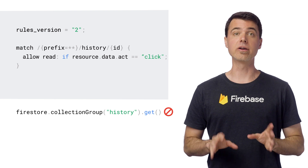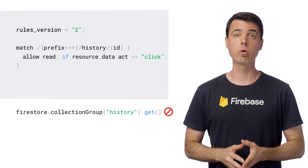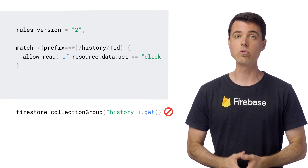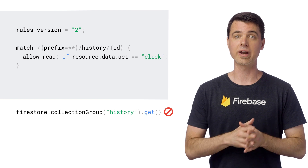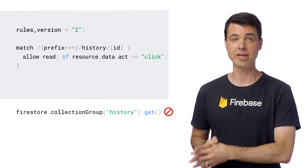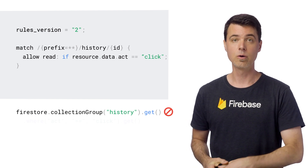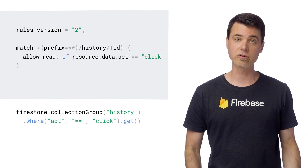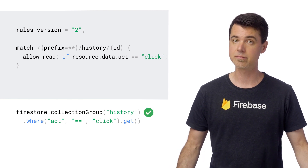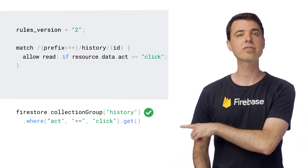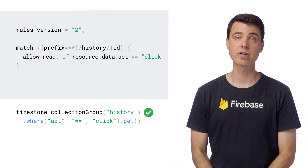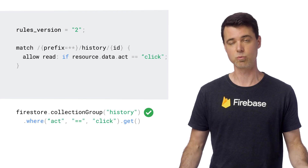The solution here is to make sure the query is in sync with the rules. Since the rules say that only queries where an activity string is click can be satisfied, we can add a filter to the query to match the rules, and now everything is good. Of course, this is the JavaScript syntax for the filter, and other languages will look different.